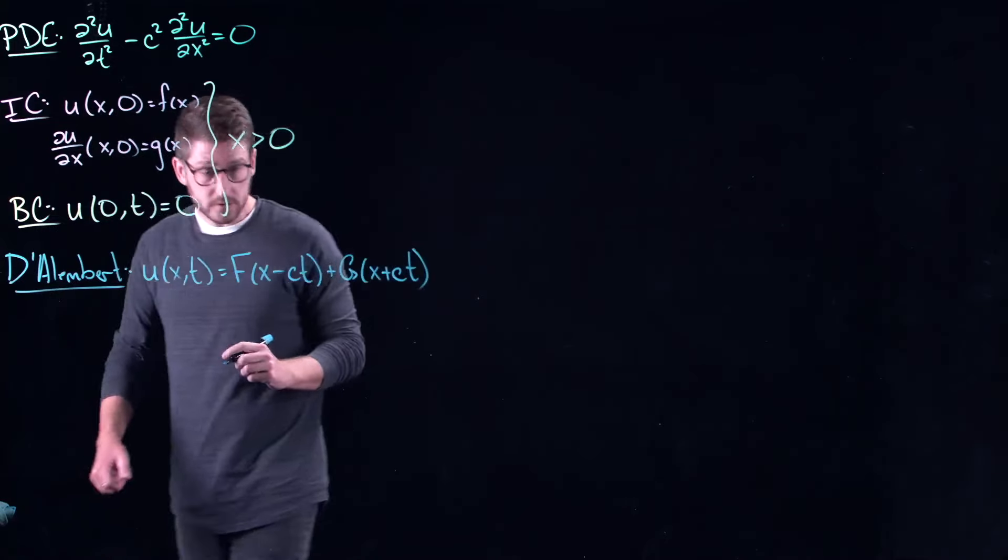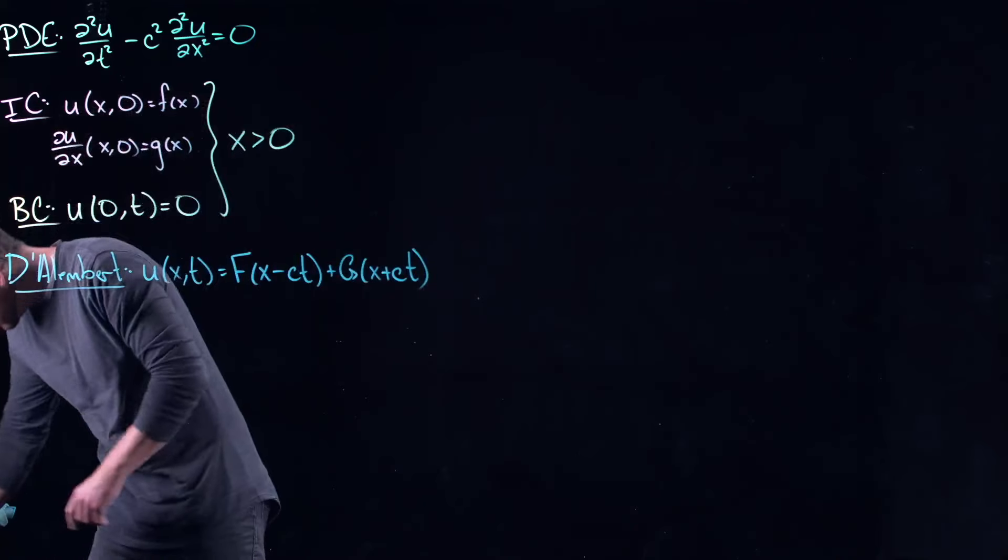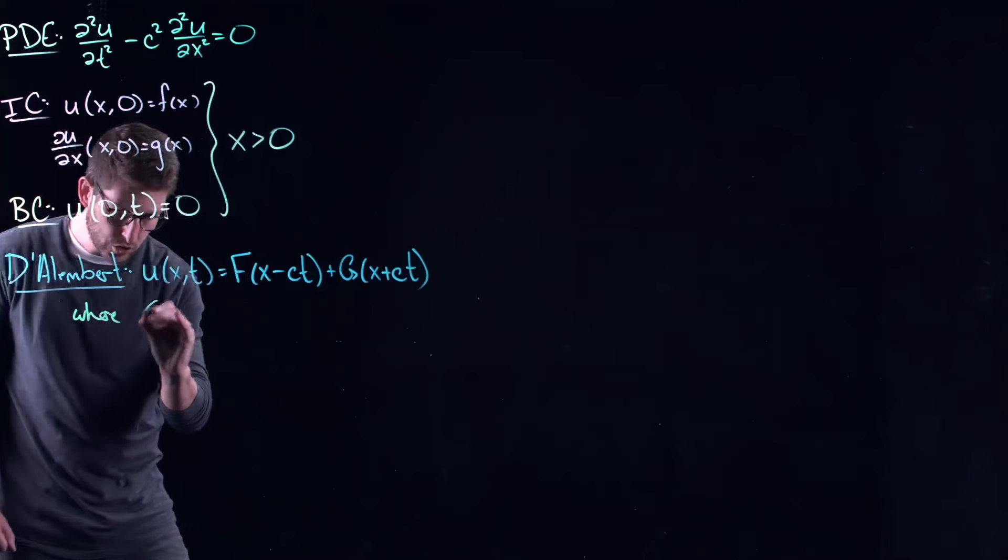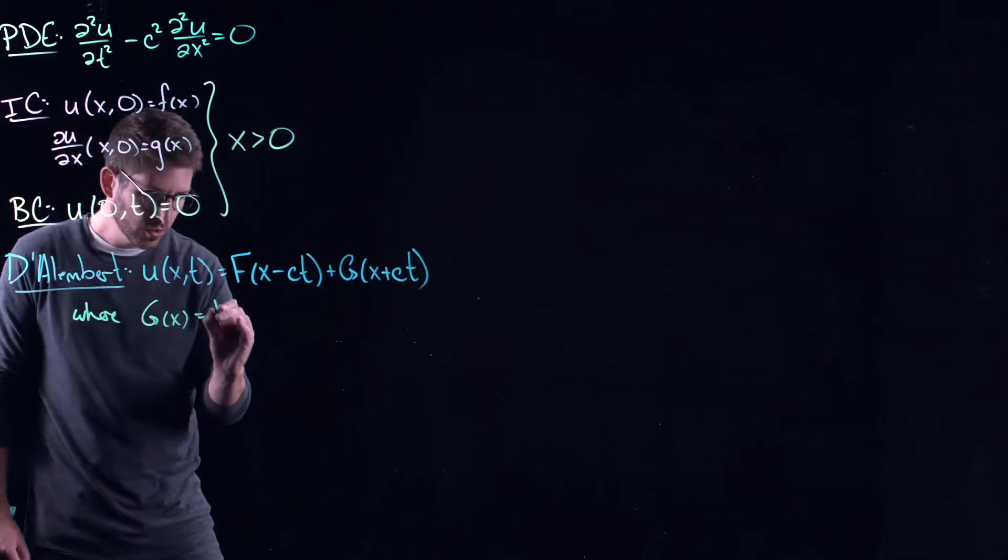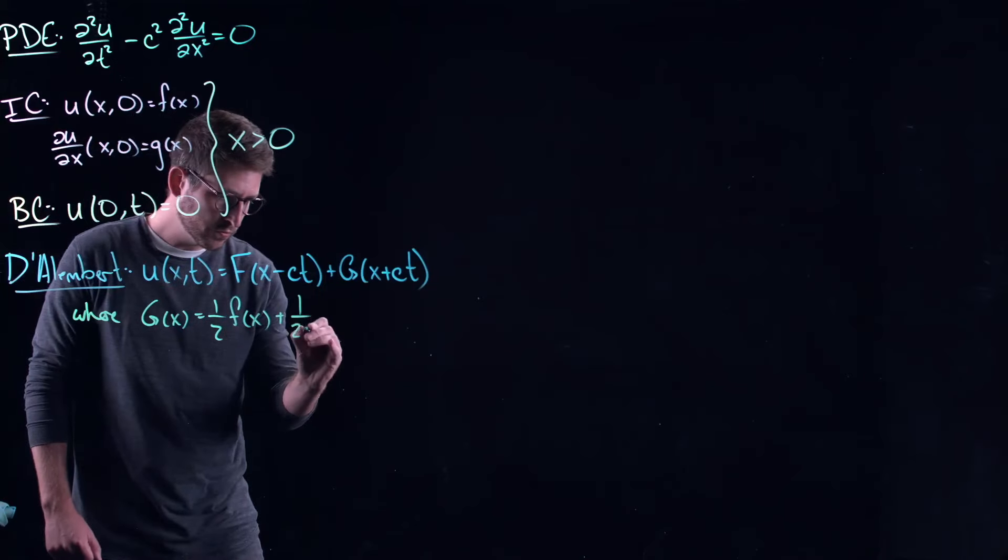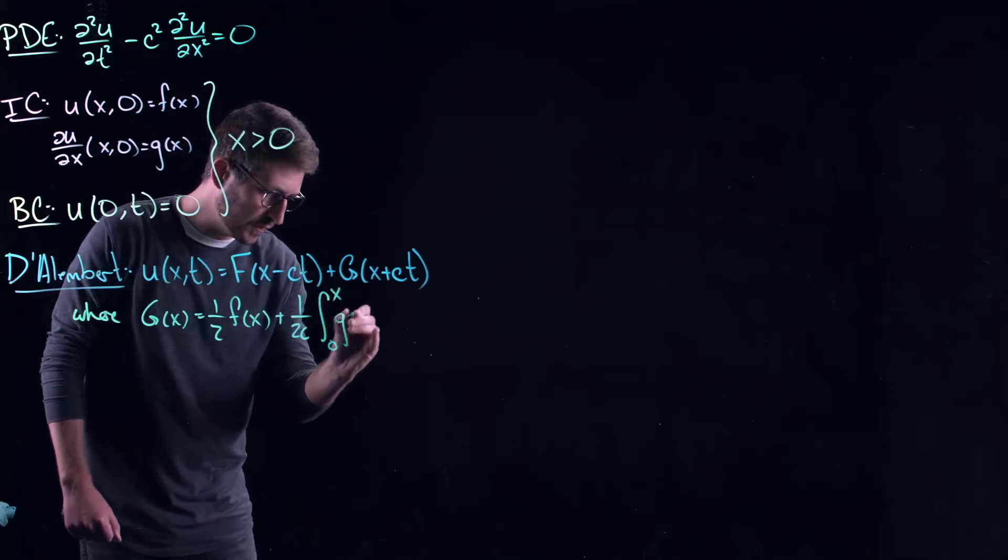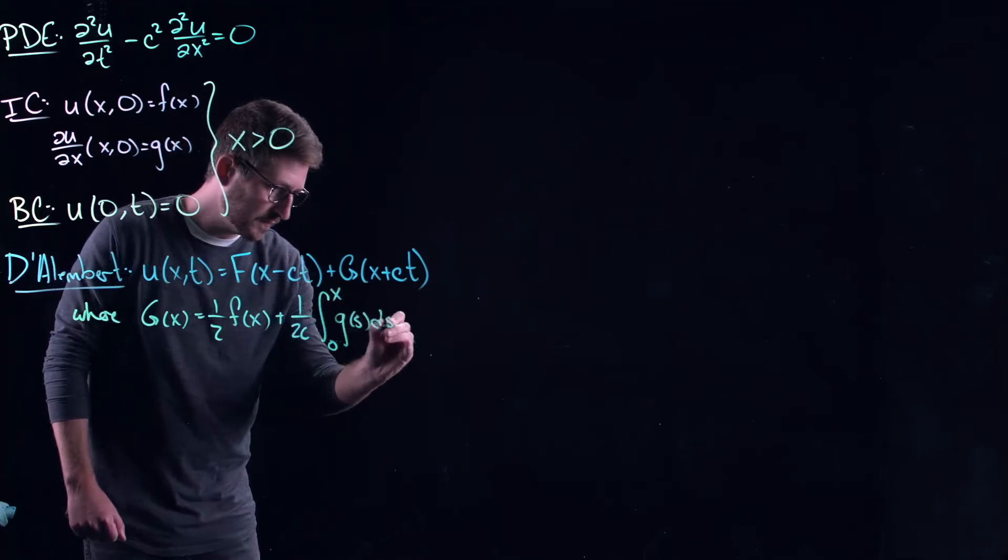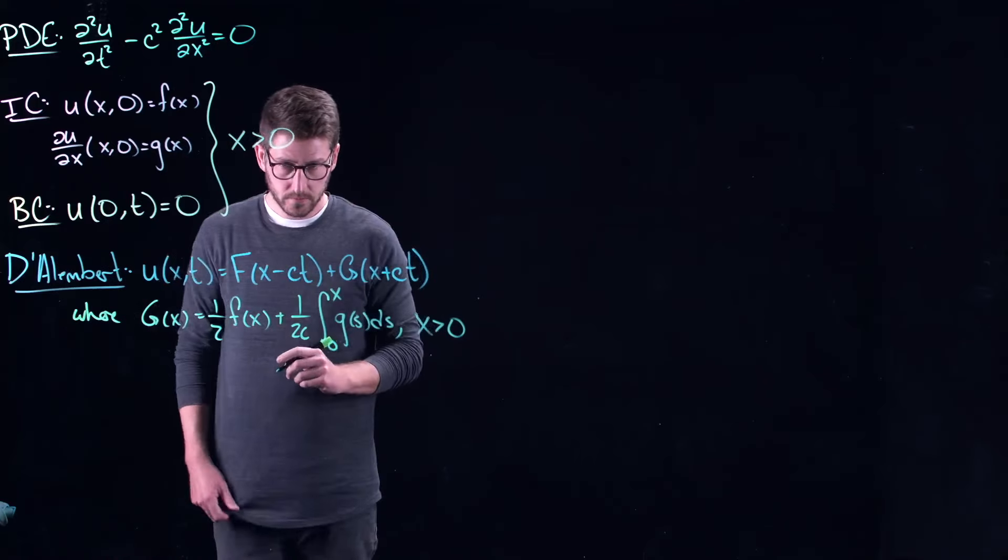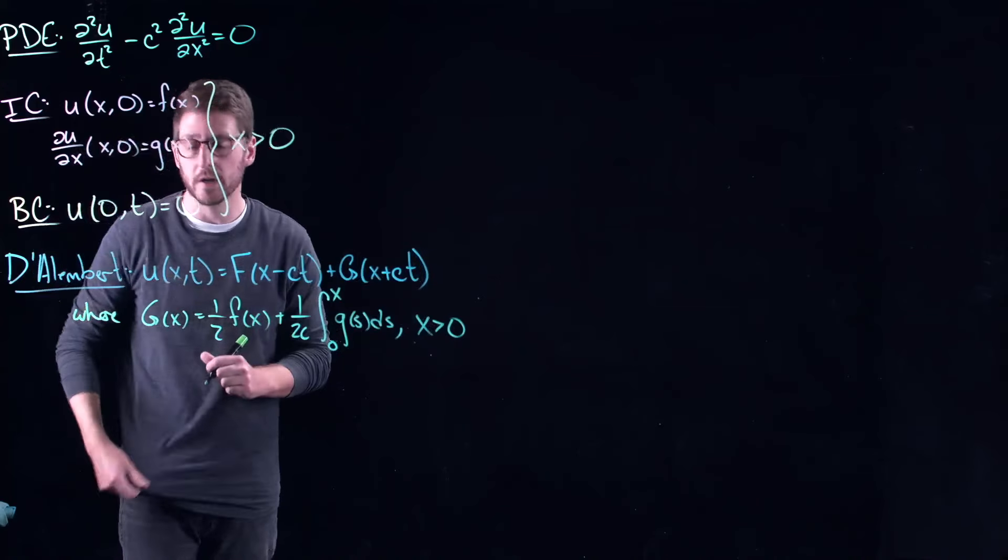And of course, where we have the following. So let's say g of x equals one half f of x plus one over 2c the integral from 0 to x of g of s ds. But again, this is only for x greater than 0 because these initial conditions are only given for x positive.